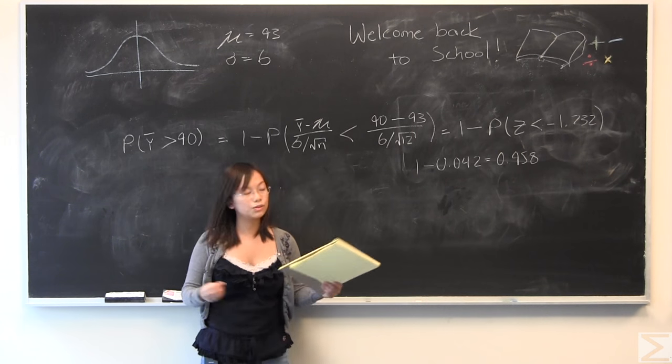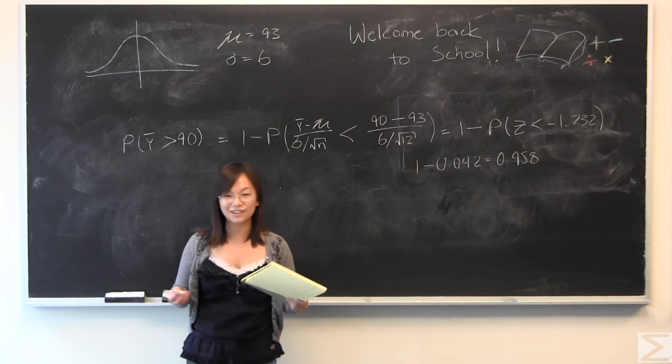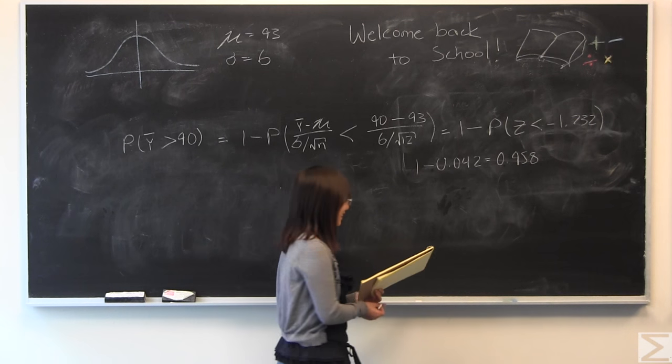So when we pull 12 random people from this population, we have a 96% chance that their average is going to be greater than an A minus. So that's really good.